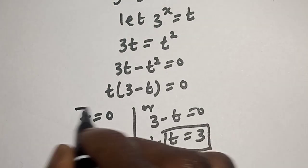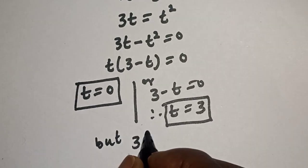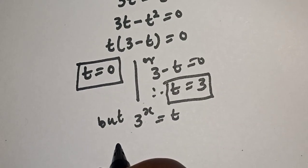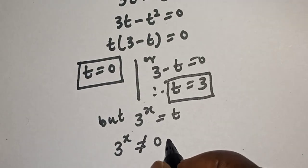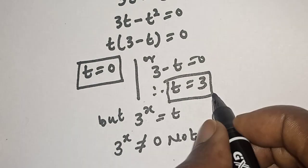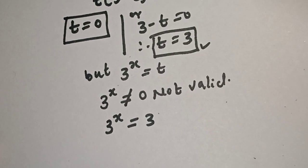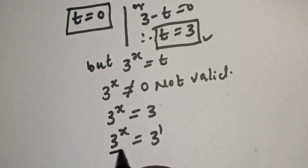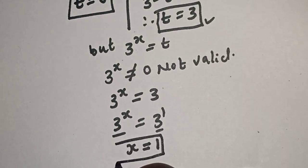These are the values of t. But 3 raised to power s equal to 0 is not valid. So we work with t equal to 3. We have 3 raised to power s is equal to 3, which is 3 raised to power s equal to 3 raised to power 1. Since we have the same base, s is equal to 1. This is the final answer.